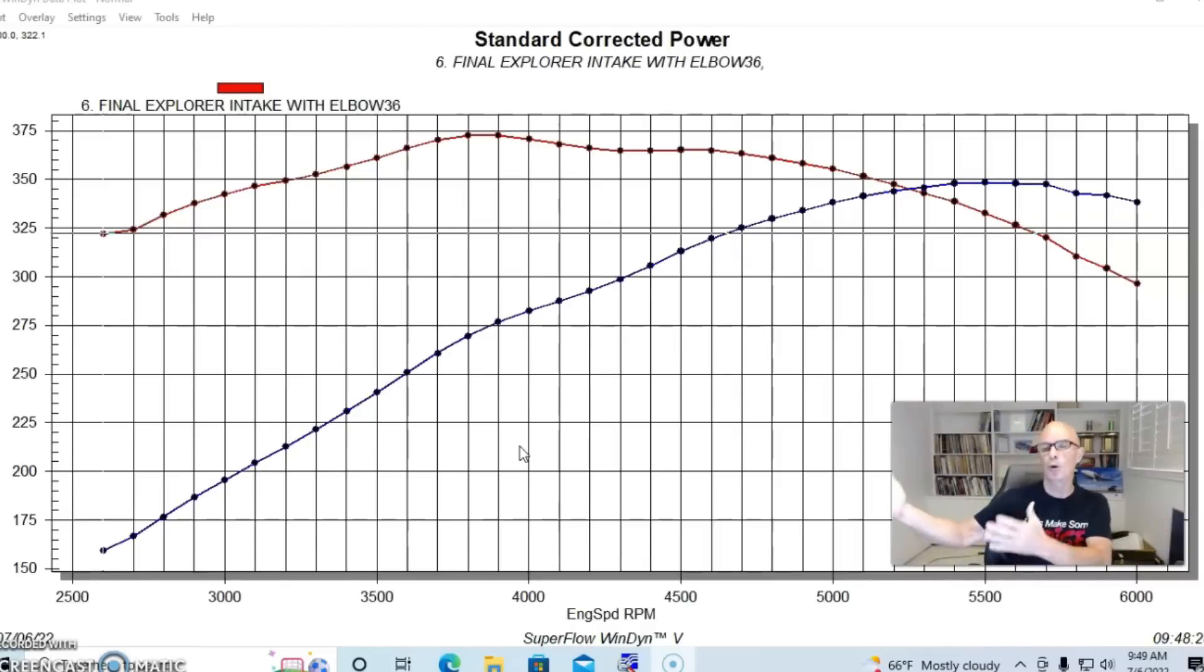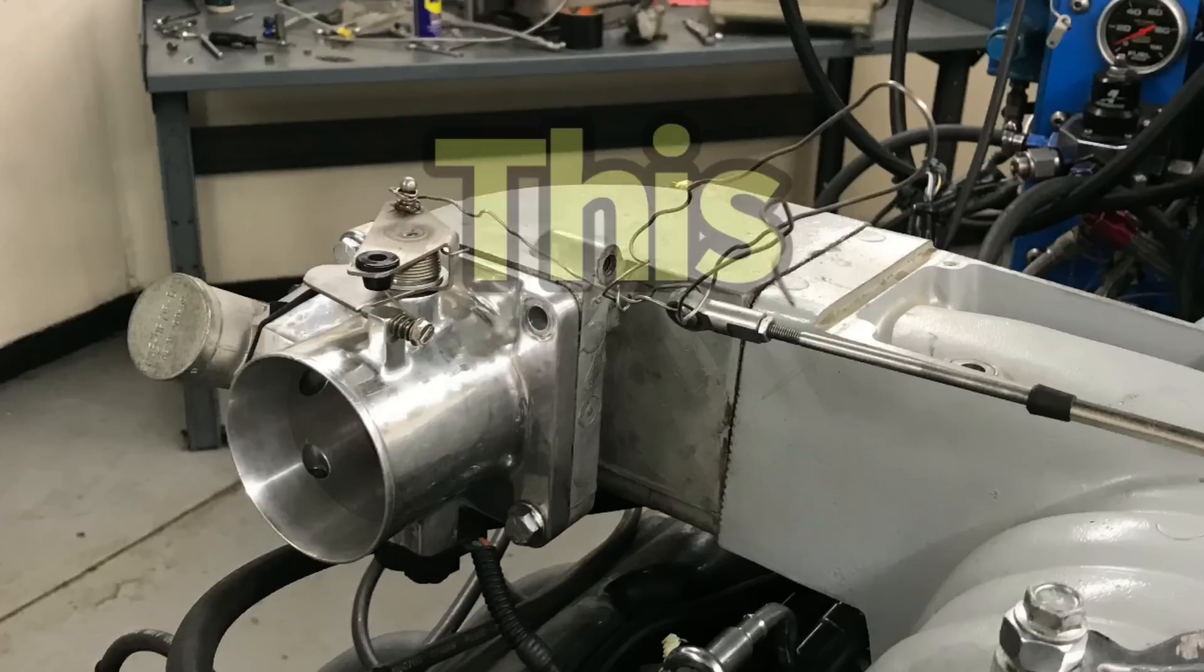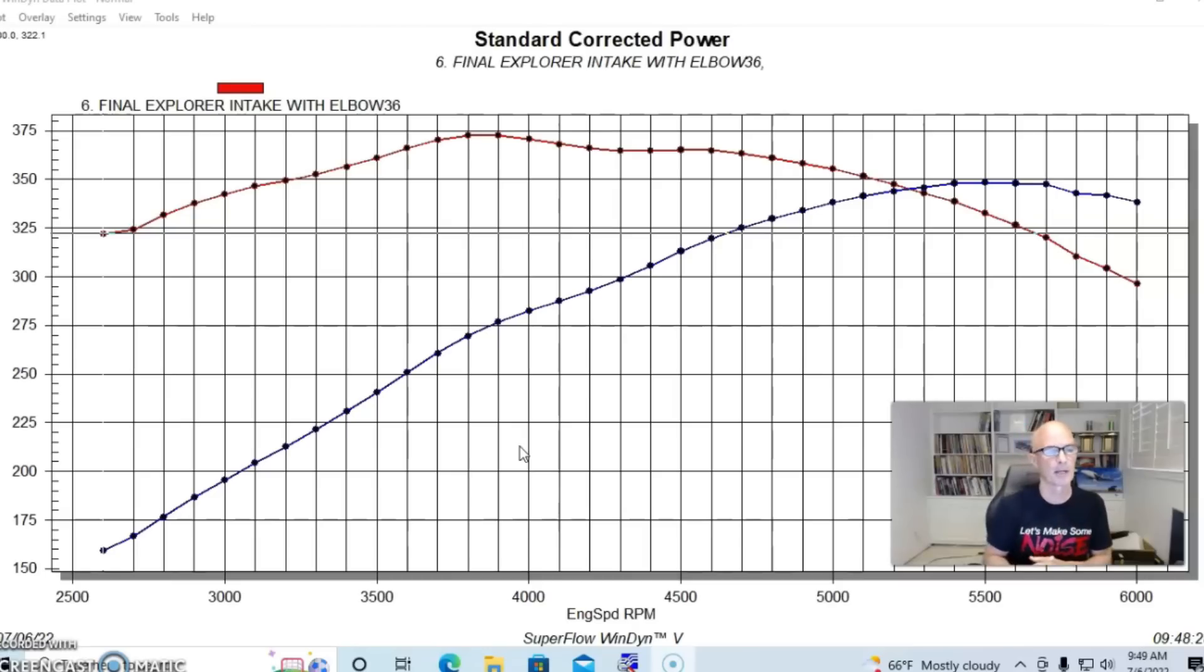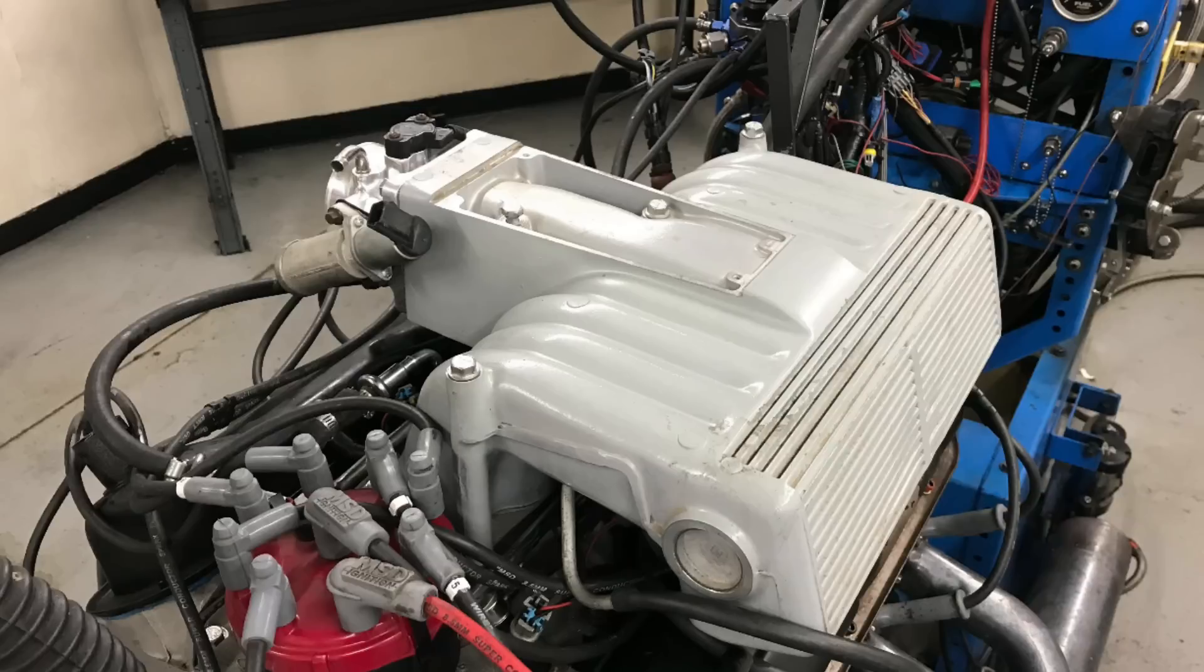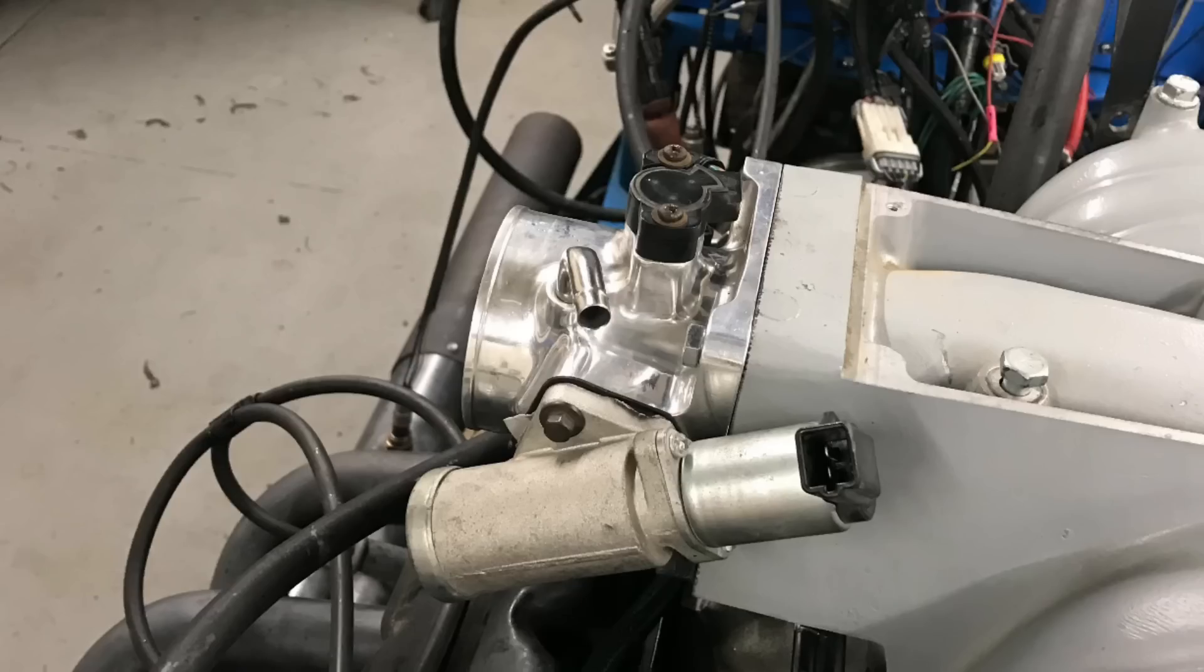And the reason I was interested in it is I wanted to run a comparison between running the elbow that they run on that, which is a 90-degree turn that mounts the throttle body, and running no elbow, because you could also mount the throttle body directly to the intake manifold.